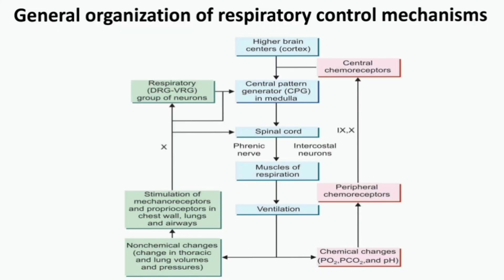Welcome to this video on the regulation of respiration, mainly the neural regulation. The regulation of respiration can be either neural or chemical. Neural regulation involves brain areas, while chemical regulation is based on changes in oxygen, carbon dioxide, and H+ ion concentration, mediated by special receptors called chemoreceptors.